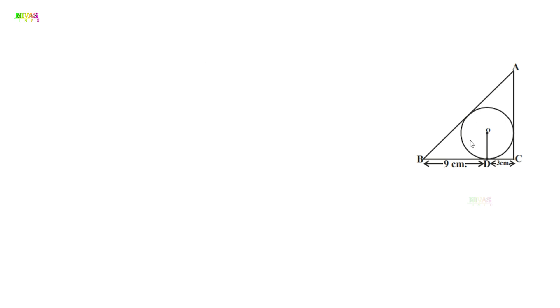The key point here is that a circle of 3 centimeters radius is drawn inside the triangle. Points B, A, and C are external points to the circle. From these external points, tangents are drawn to the circle.